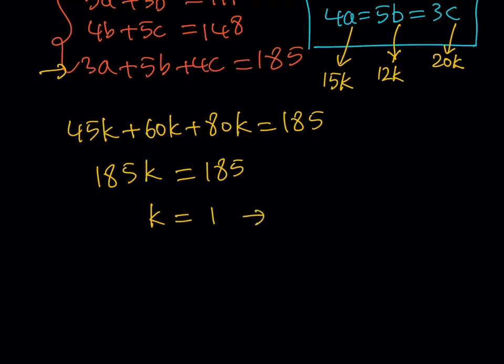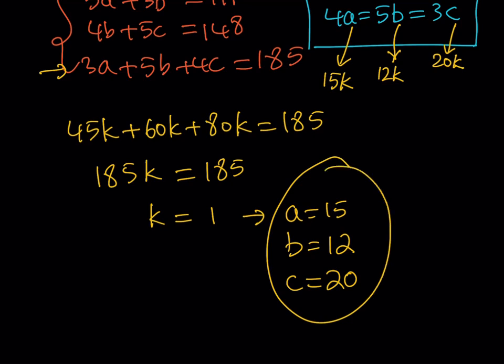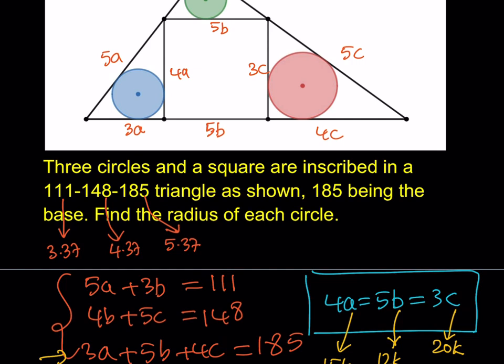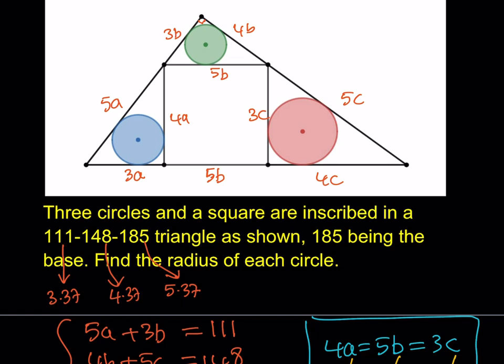And now from here, since I know k, I can find the value of a, b, and c separately. a is 15k, so a would be 15, b would be 12, and c would be 20. I got the values of a, b, c, which means all the lengths that we are concerned with are found. But here's one observation I'd like you to make, because all these triangles, I'm talking about four of them, they're all similar.